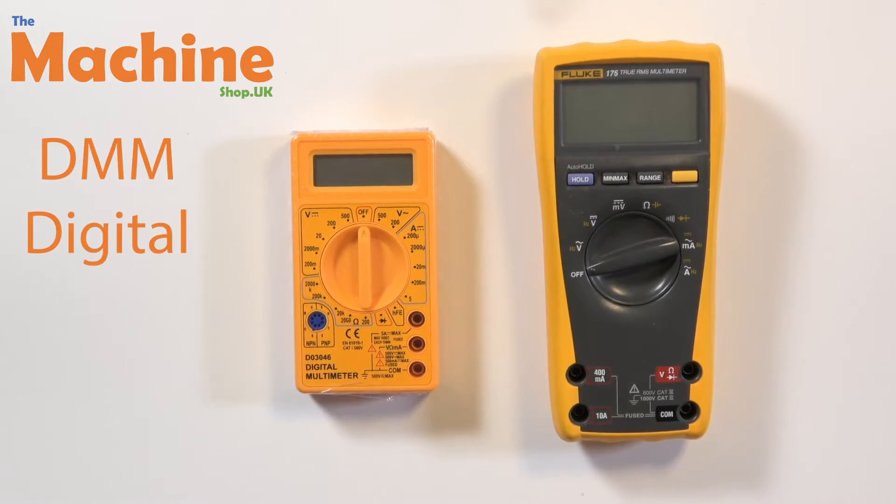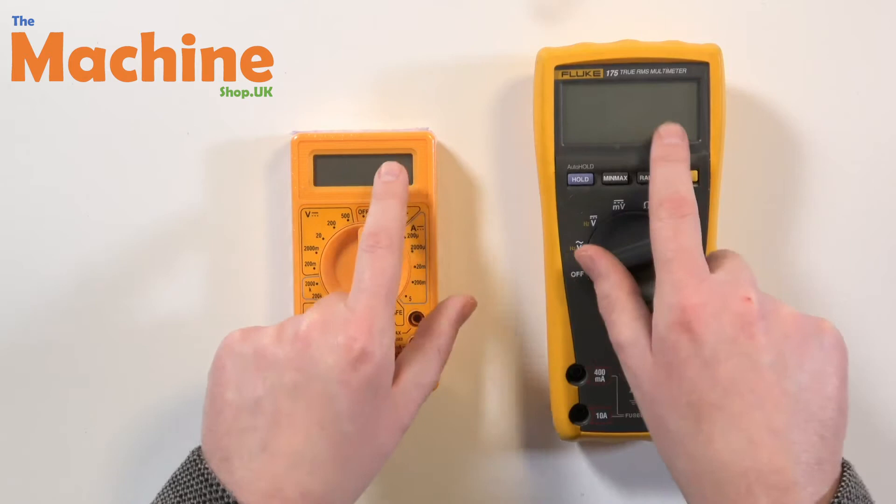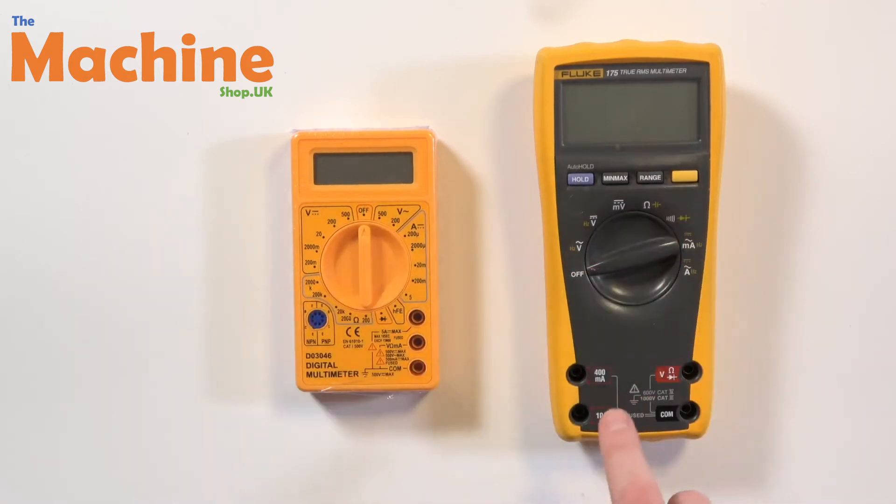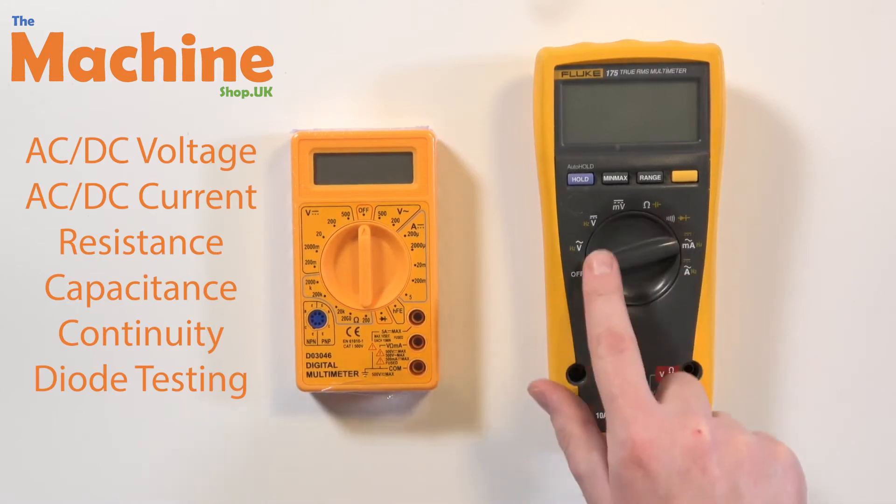DMMs or digital multimeters are tools that we can use to measure voltages of different kinds. The digital part comes from the fact that these things have got digital displays - you can see they've got little LCD displays on them. The multimeter is because they're capable of measuring several different types of electrical circuits and electrical signals.